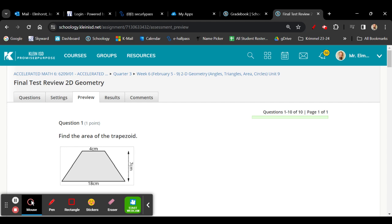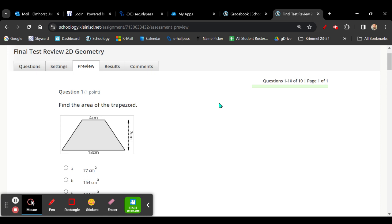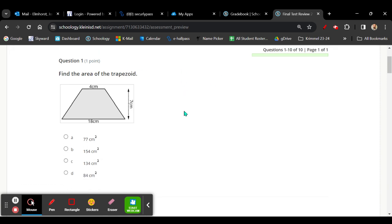This is Mr. Elmhurst with the final test review for the 2D geometry. We're looking at circumference, circles, area, and angle concepts.